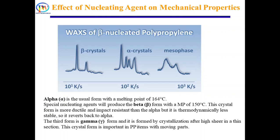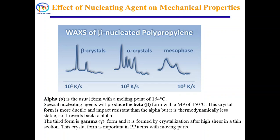By incorporating special nucleating agents, we can change the polymer crystal type. Some polymers crystallize in more than one crystal form, which leads to different properties from the same polymer. For example, polypropylene has three well-known crystalline forms: alpha, beta, and gamma. As seen in the XRD spectrum, there are clear differences in the crystalline structure of all three crystalline forms of polypropylene, so depending on the application requirement we can use a polymer with a specific crystal type having desired properties.